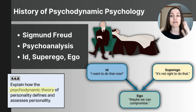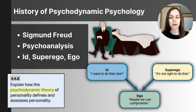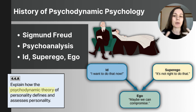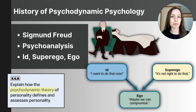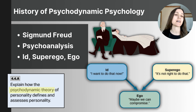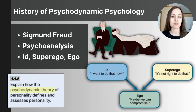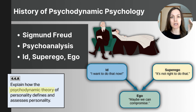The ego is the rational, most conscious part of the mind. It tries to balance the id and the superego, operating in the present and making decisions by considering our desires alongside the constraints of reality. In Freud's view, the interaction between these three parts of the mind shaped our personality and ultimately our behaviors.